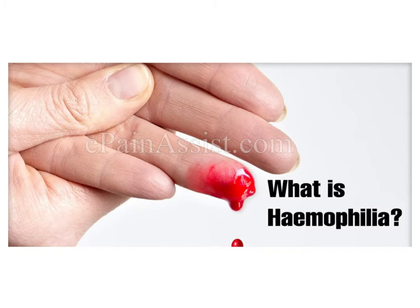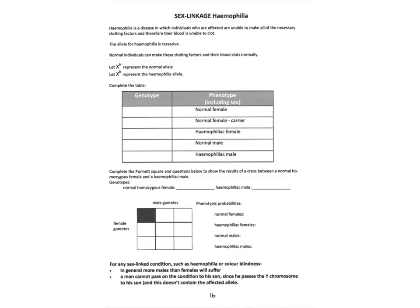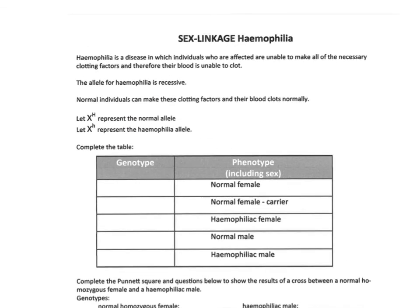Another sex-linked condition is haemophilia, a disease where if someone starts bleeding they don't have the right clotting factors and just keep bleeding. Treatment involves adding clotting factors to their blood, and sufferers need to be very careful — even going to the dentist requires caution. It is a serious but inherited sex-linked condition, and looking at page 16, it is recessive and carried on the X chromosome, inherited in the same way as colour blindness.